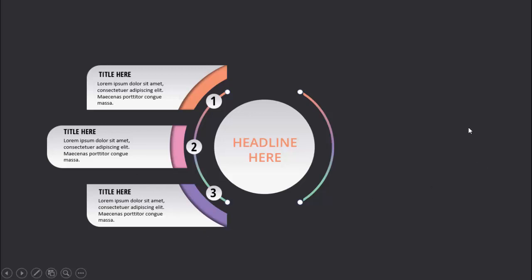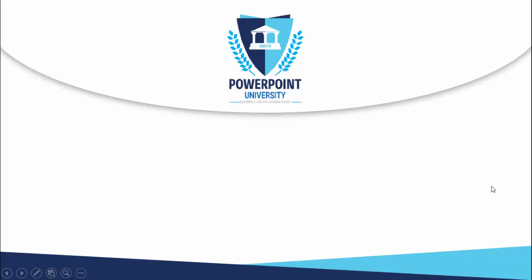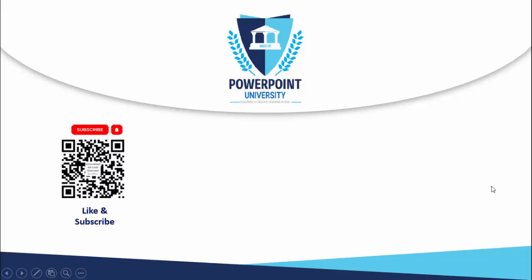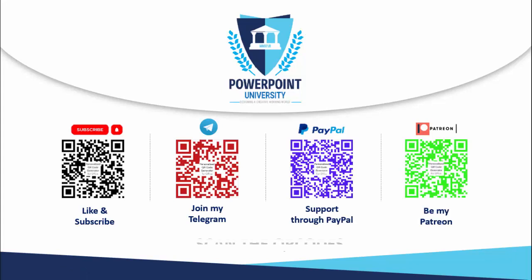When I click on the right side it will show you the remaining three options, and you can add the title and the detailed text. If you have not subscribed to my channel PowerPoint University, please subscribe and enable the bell notification icon. You can join my Telegram group with the link provided, and if you'd like to support my channel you can do it through PayPal or Patreon.